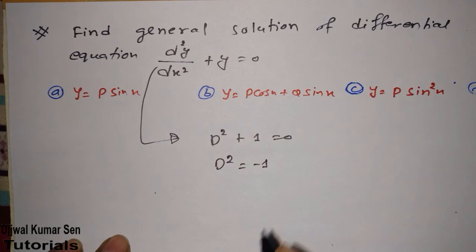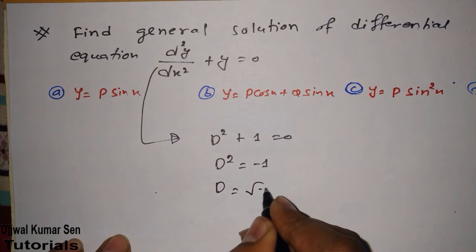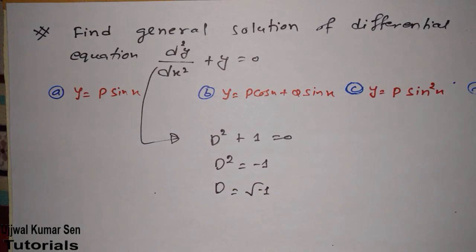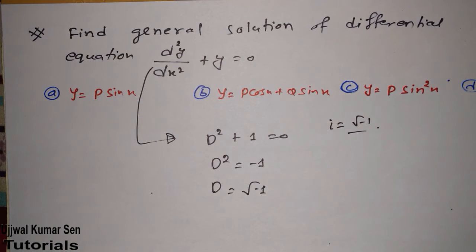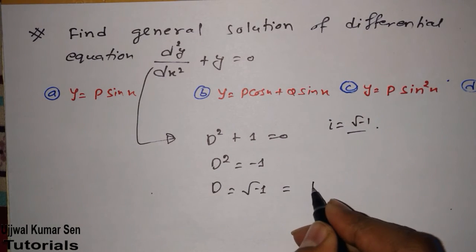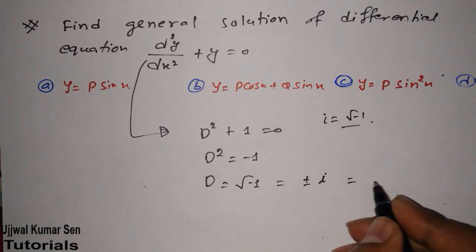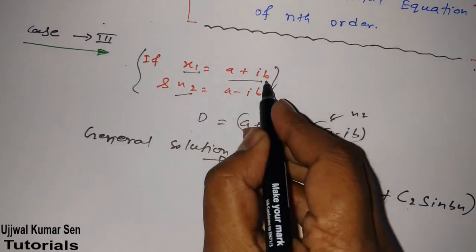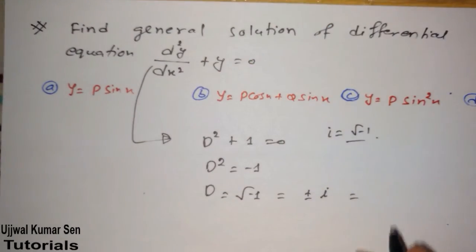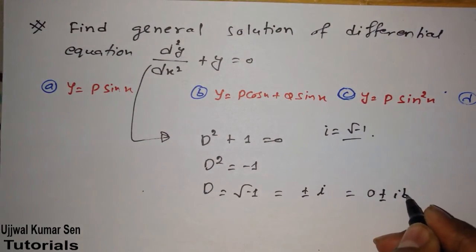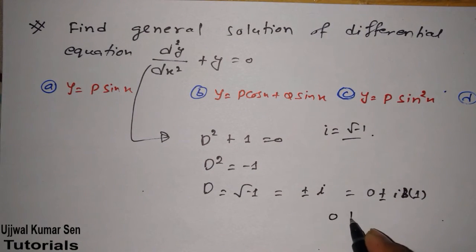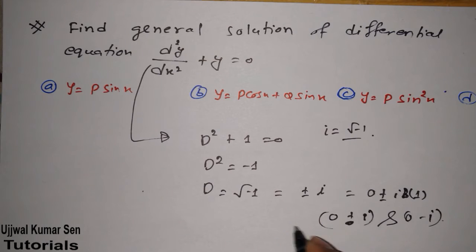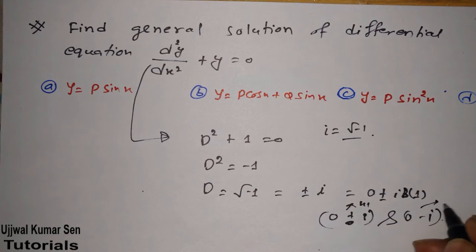From d² plus 1 equals 0, we get d² equals minus 1, and so d equals root of minus 1. Root of minus 1 is an imaginary term because we know that iota equals root of minus 1. So we can write this as plus minus iota, and we can rewrite this to match the form a plus ib. So we can write this as 0 plus i and 0 minus i — meaning a equals 0 and b equals 1. So we got x1 equals 0 plus i and x2 equals 0 minus i.